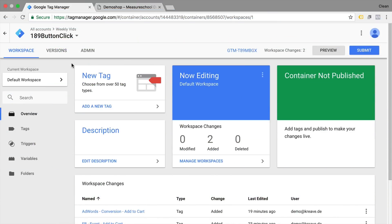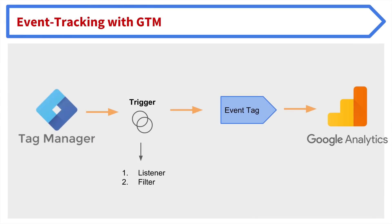Before we get started we need to learn a little bit of theory on how auto event triggers work within Google Tag Manager. If you want to install event tracking with the help of Google Tag Manager, you need to be aware that Google Tag Manager can deploy an auto event trigger. This trigger actually has two functionalities: one is the listener functionality and the second one is the filter functionality. These combined determine whether a tag, like an event tag, is deployed and transfers information to Google Analytics.